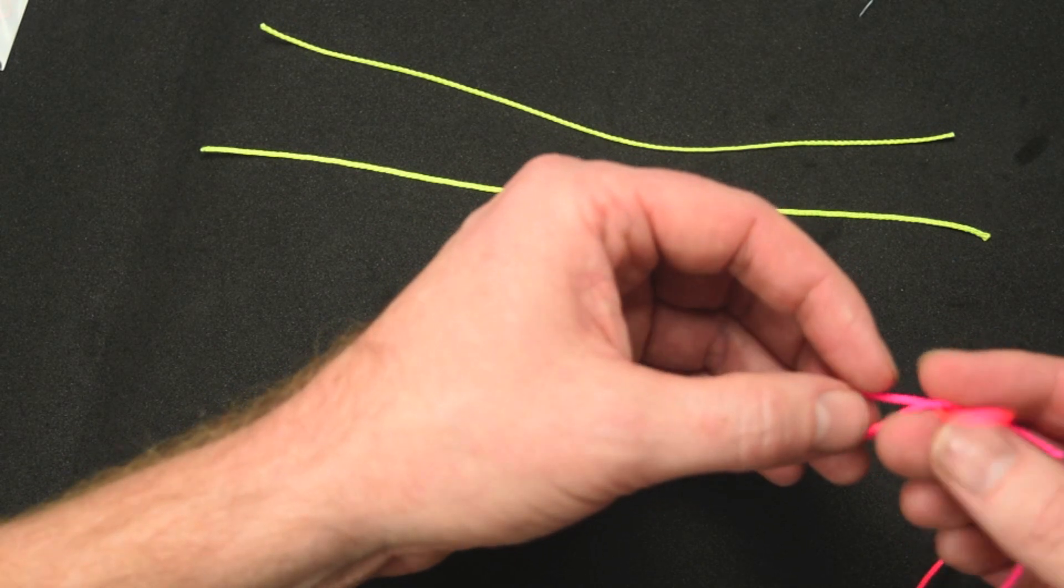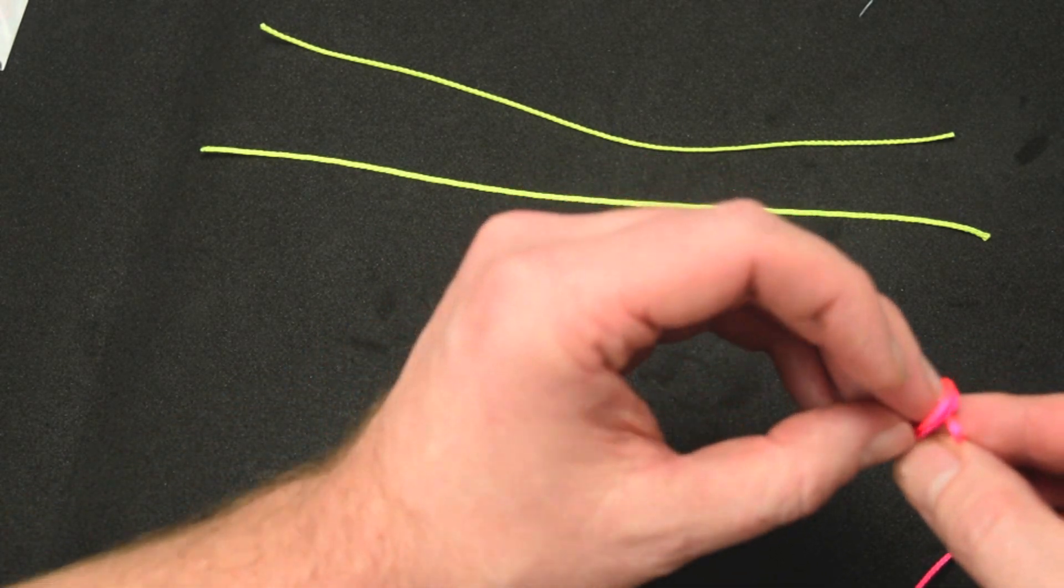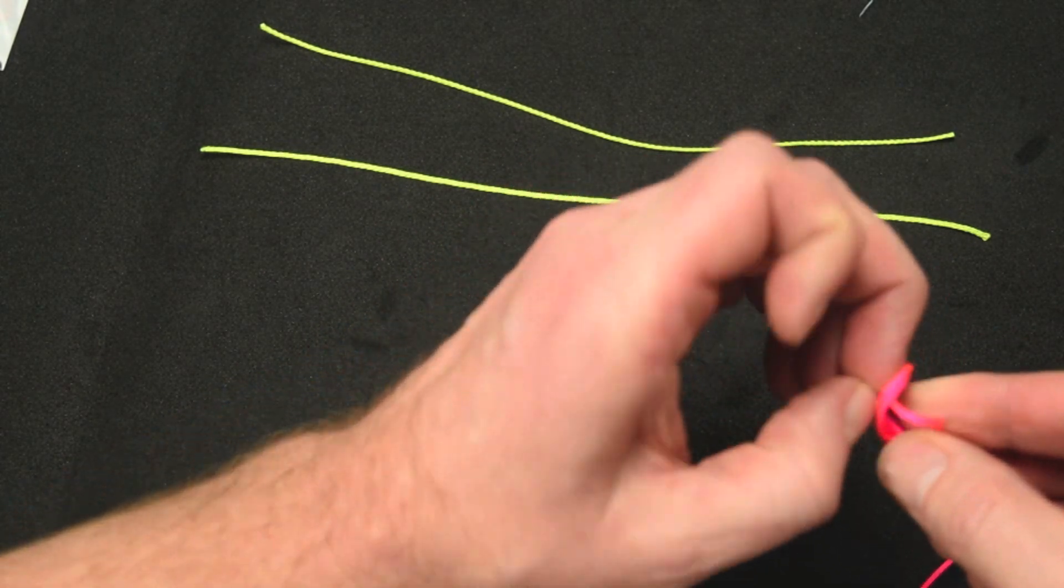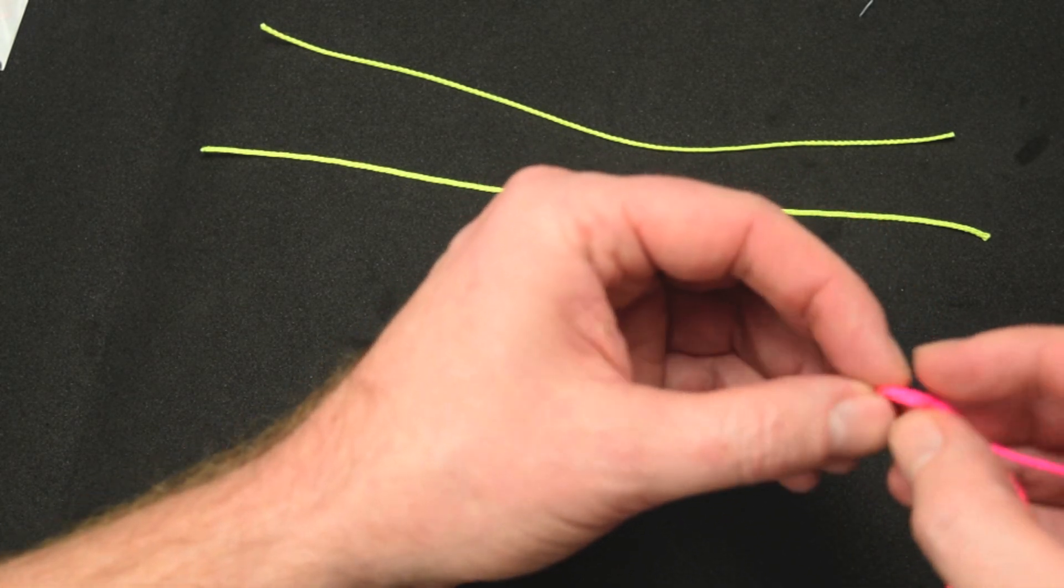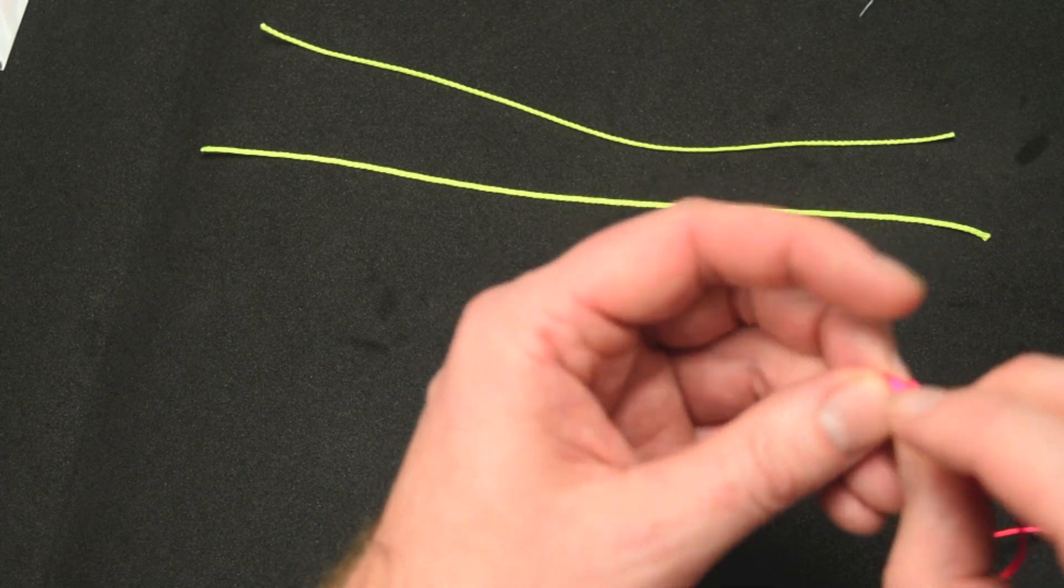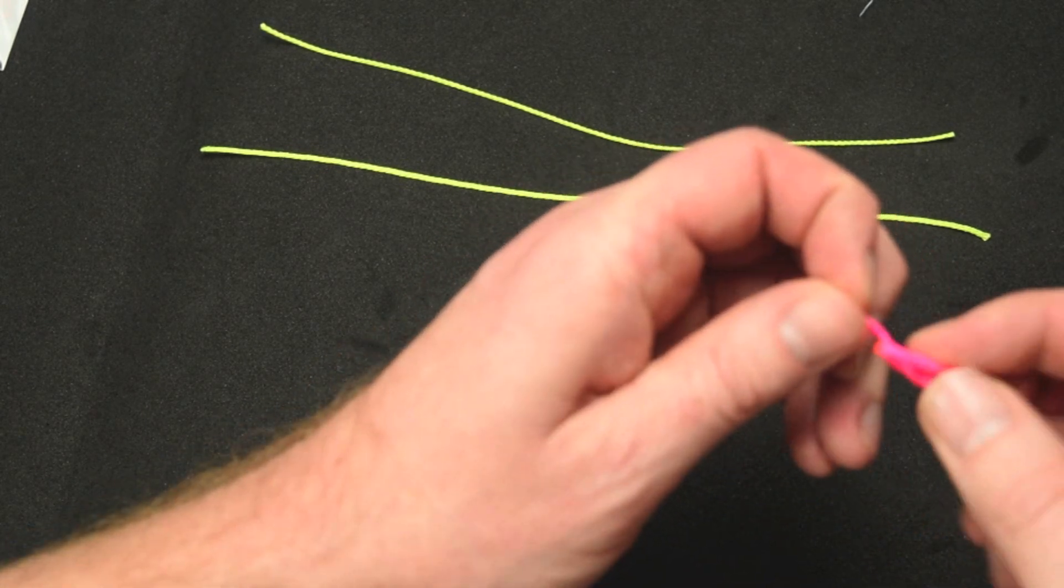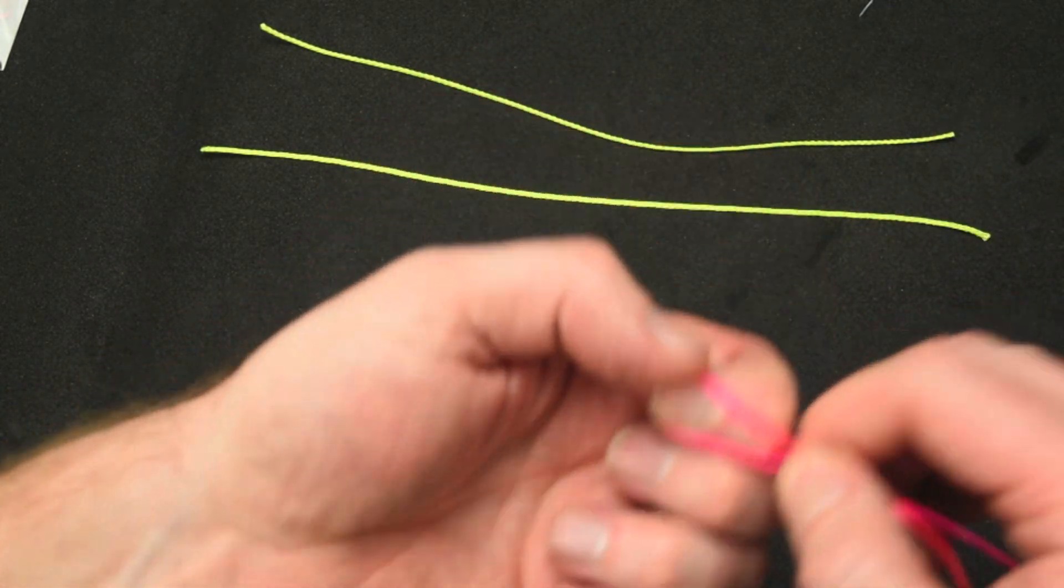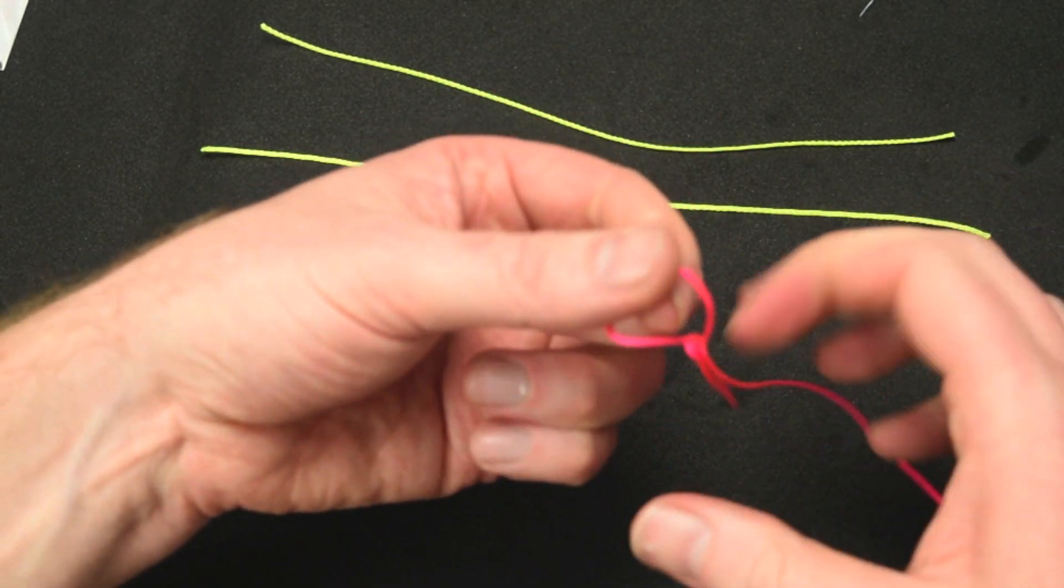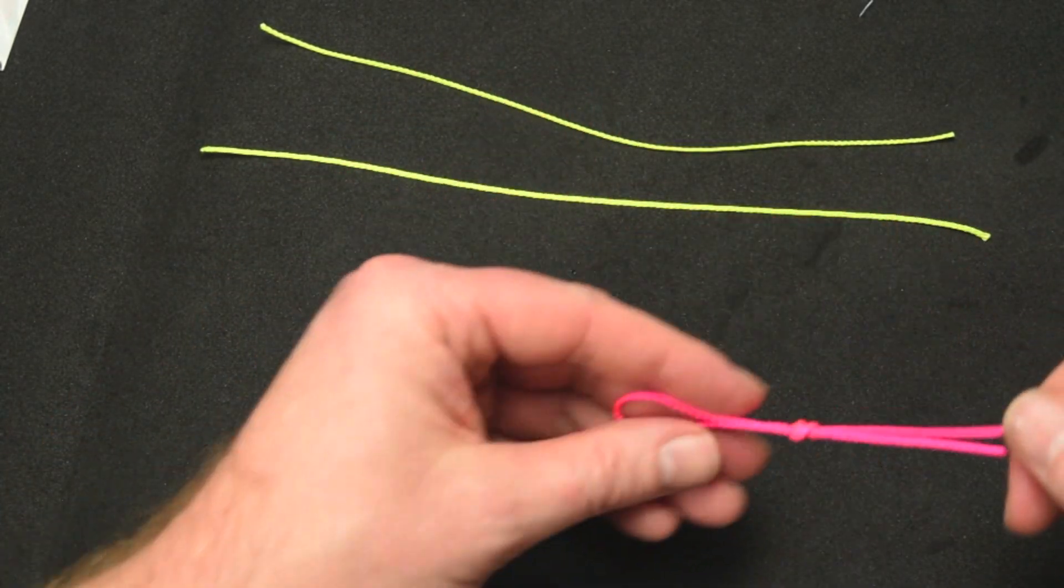So what we're going to do is first off we're going to start by putting a loop in the bottom of the line. And there's many ways to do this but this is the way I do it. Put a loop in the bottom of the line, go around, come back through the other loop there. Then go back in a second time. And you can do this loop as big as you want it. And this is to hold your sinker. And then just pull it tight and that will create a loop for your sinker.